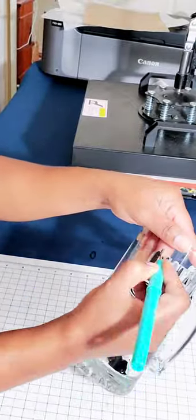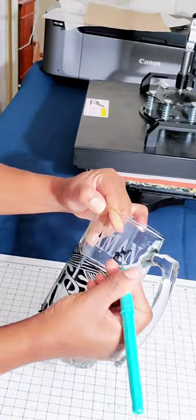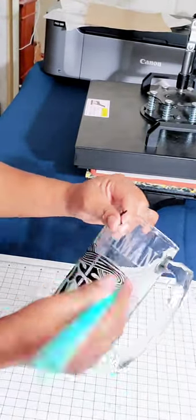I am now peeling off the vinyl, and it's really easy and smooth to remove. This is what my beer mug looks like. I hope you like it. Please subscribe.